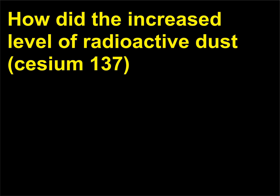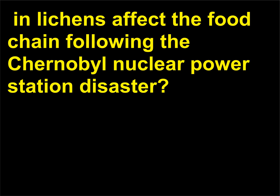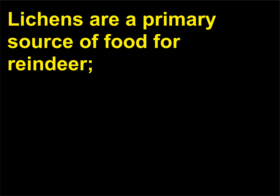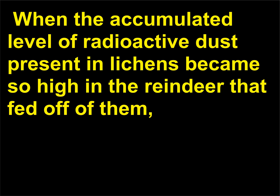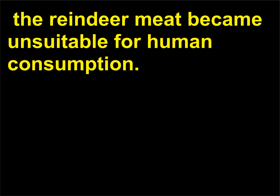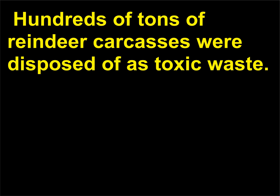How did the increased level of radioactive dust, caesium-137, in lichens affect the food chain following the Chernobyl nuclear power station disaster? Lichens are a primary source of food for reindeer, which is commonly consumed by humans that live in regions of tundra. When the accumulated level of radioactive dust present in lichens became so high in the reindeer that fed off of them, the reindeer meat became unsuitable for human consumption. Hundreds of tons of reindeer carcasses were disposed of as toxic waste.